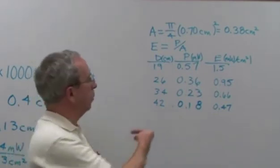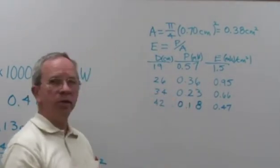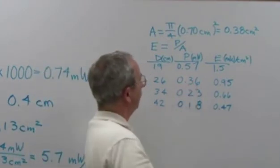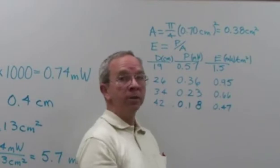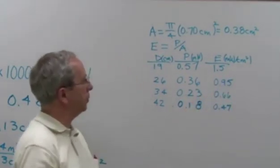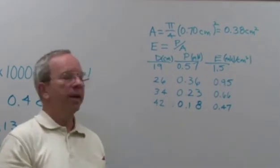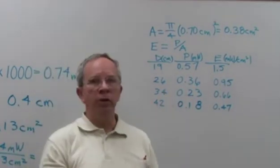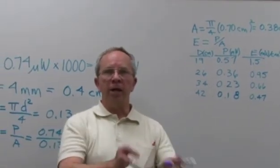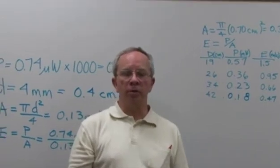And when we move our detector back a little bit to a distance of, in our case, 26 centimeters, then we have a lower power of 0.36 milliwatts. And that yields a calculation of an irradiance of 0.95 milliwatts per square centimeter. And so on. So you can see as you move farther and farther away from the laser and the diverging lens that the irradiance gets smaller and smaller.